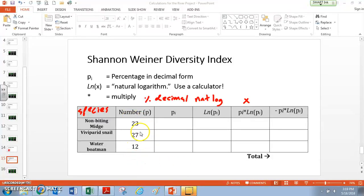You can't calculate a percent without the total. So the total here, 23 and 27 and 12, is 62. So that's my total number of organisms. So I need to know that in order to calculate any of the rest of this.